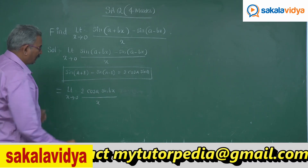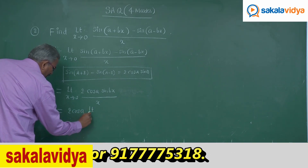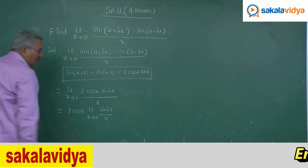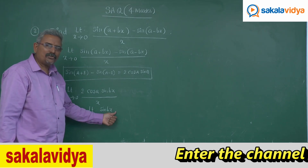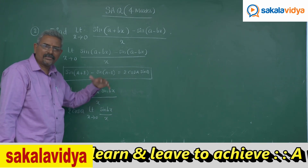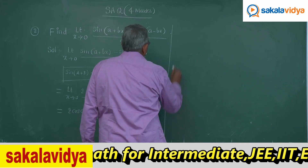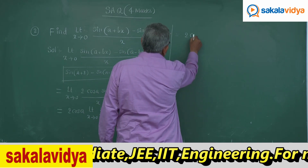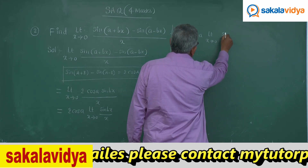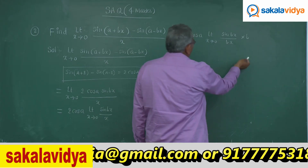The 2 can be taken out as a common factor, giving us 2 cos a multiplied by limit x tends to 0 of sine(bx) by x. Some manipulation has to be done: we rewrite this as 2 cos a times limit x tends to 0 of sine(bx) by bx, multiplied by b.